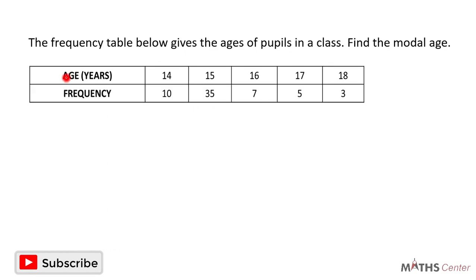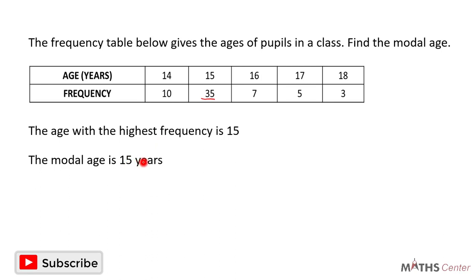Let's consider another question. Here we have a frequency table. The frequency table below gives the ages of pupils in a class — find the modal age. Just as we have learned, the mode is the number with the highest frequency. The modal age will be the age with the highest frequency. Looking through the frequencies, the highest frequency is 35, and the age with that frequency is 15. So the modal age is 15 years. Remember, the mode is not 35 — that is the frequency. The age that gives you the highest frequency is 15, which occurs 35 times.